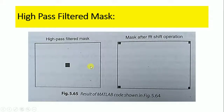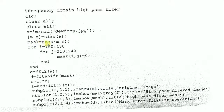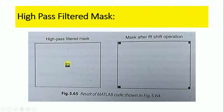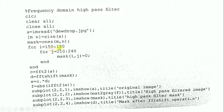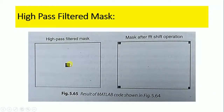To define the high pass filter mask, we take mask equal to ones of M comma N, same as the size of image A, making the complete mask ones. We then set the mask area at a specific region to zeros. For i equal to 150 to 180 and j equal to 210 to 240, mask of i,j is set equal to 0. At this area the mask value becomes 0, and all remaining places have pixel value 1.